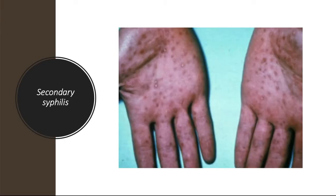The chancre of primary syphilis resolves spontaneously over a period of 4 to 6 weeks and is followed in approximately 25% of untreated patients by the development of secondary syphilis. The manifestations of secondary syphilis include generalized lymphadenopathy and mucocutaneous lesions. The mucocutaneous lesions of both primary and secondary syphilis are teeming with spirochetes and are highly infectious. Like the chancre, the lesions of secondary syphilis resolve even without antimicrobial therapy, at which point patients are said to be in an early latent phase of syphilis.